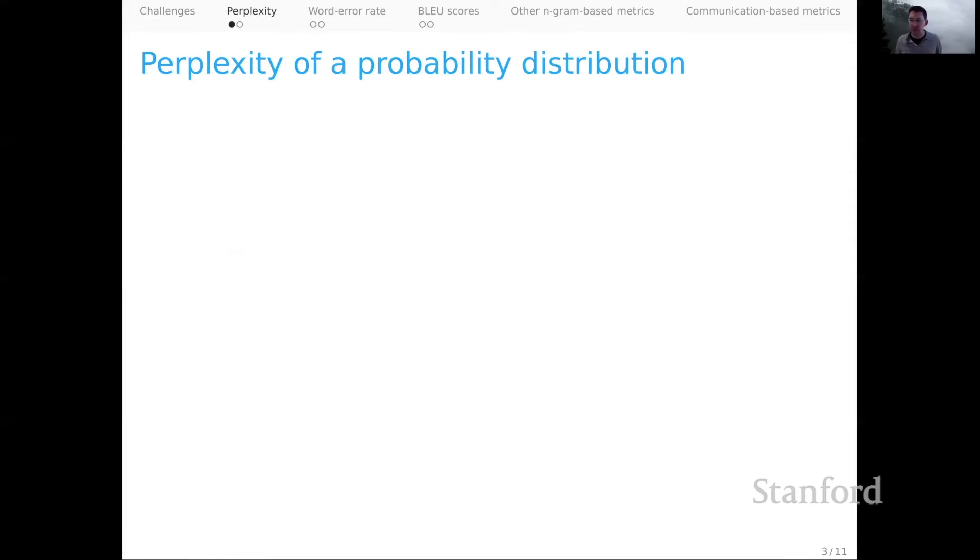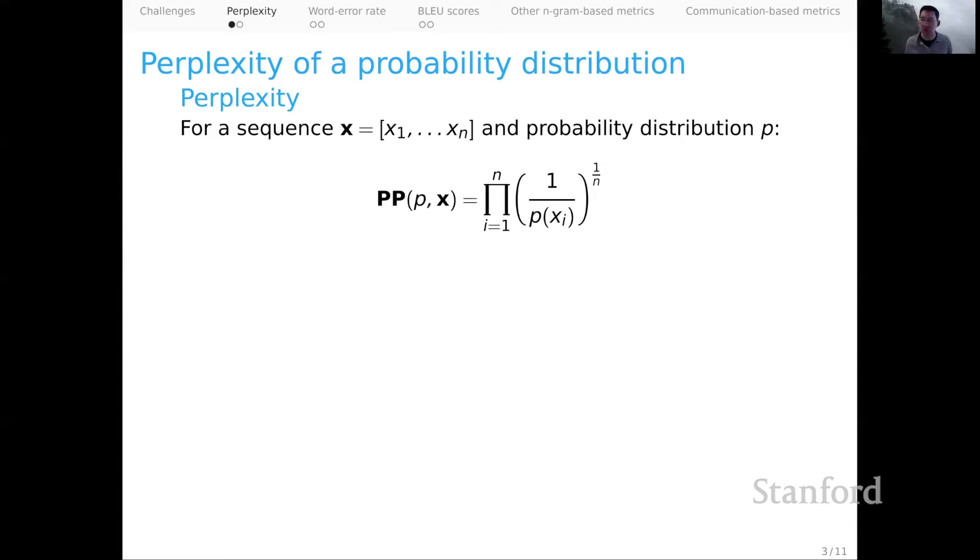Let's begin with perplexity. I would say what perplexity has going for it is that it is at least very tightly knit to the structure of many of the models that we work with in NLG. So the core calculation is that given some sequence x of length n and a probability distribution p, the perplexity of x relative to that distribution p is the product of the inverse of all the assigned probabilities, and then we take an average here.